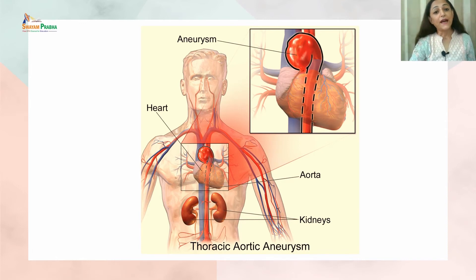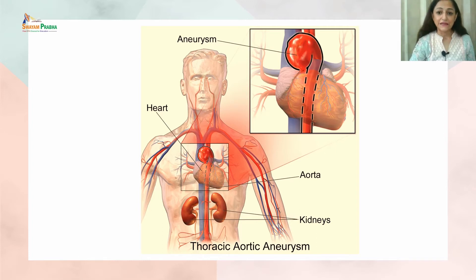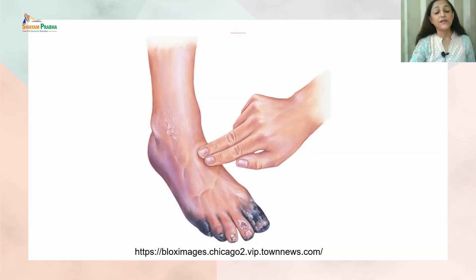Pericarditis refers to inflammation of the pericardium — two thin layers of sac-like tissue that surround the heart, hold it in place, and help it function properly. An aneurysm occurs when blood fills and dilates the blood vessels, changing their shape. This can lead to gangrene, which is the death of body tissues due to lack of blood flow.